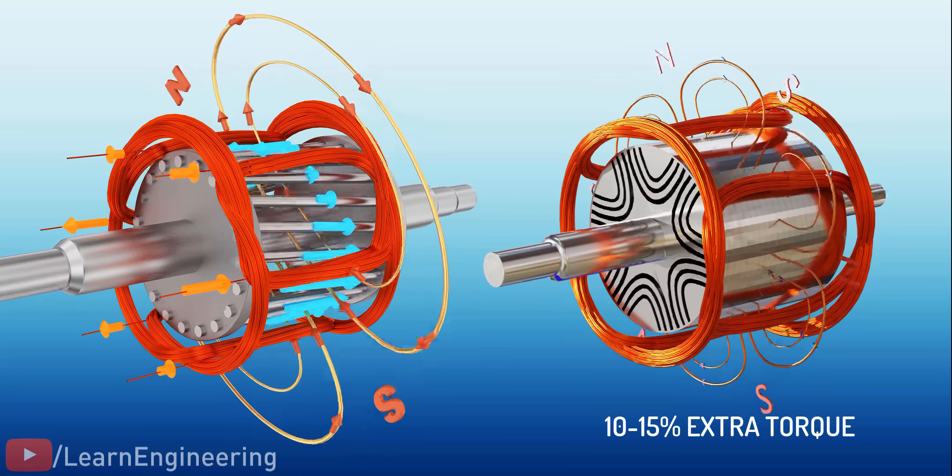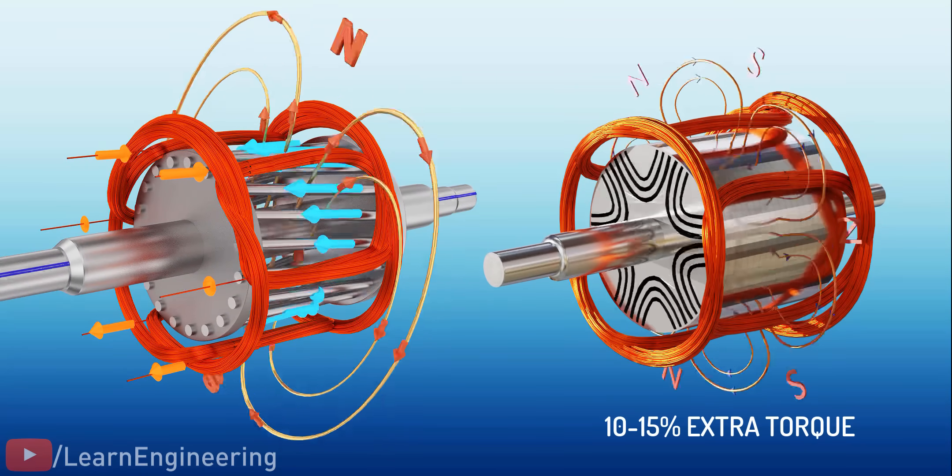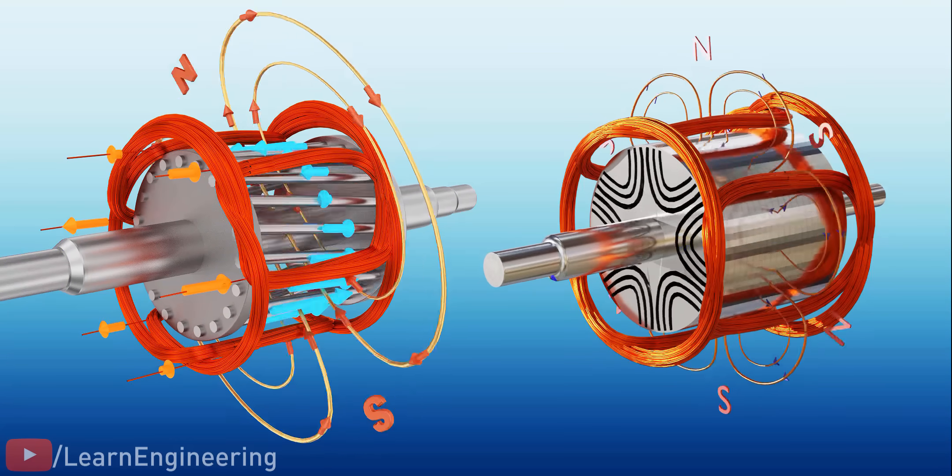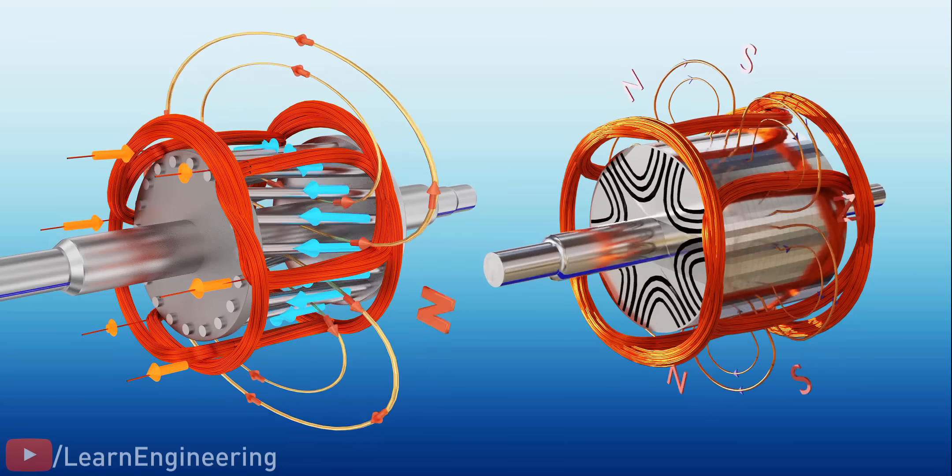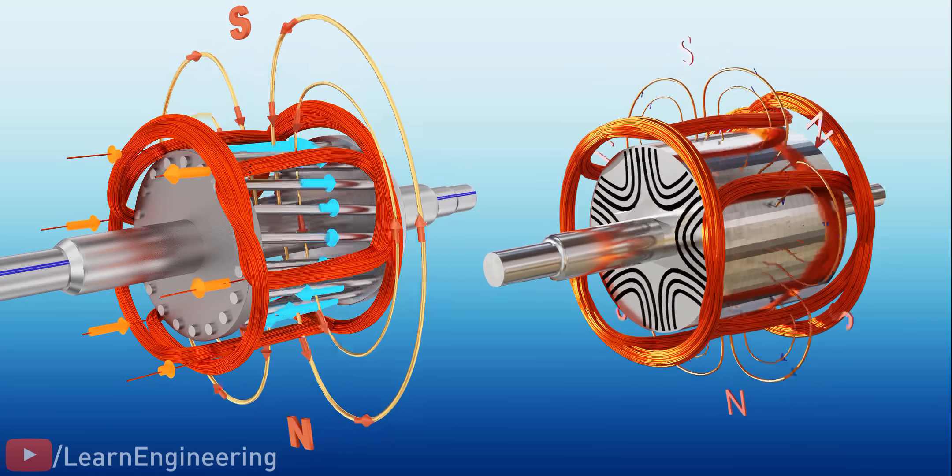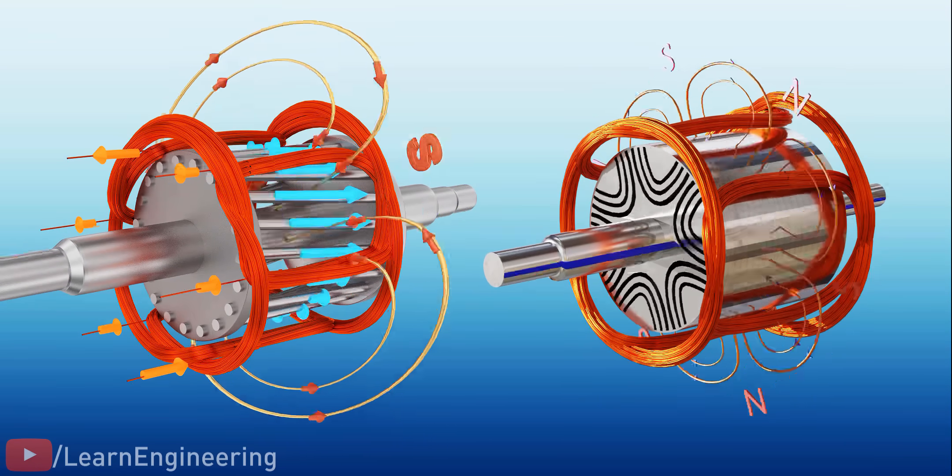Finally, the most obvious advantage. SynRMs always run at synchronous speed, the speed of RMF. In an induction motor, the rotor speed will be slightly less than the synchronous speed and this speed varies according to the load.